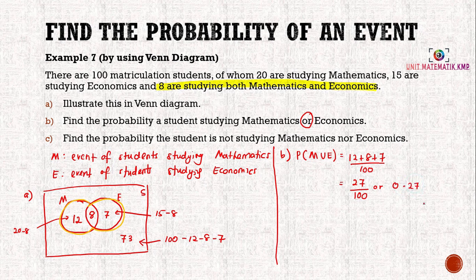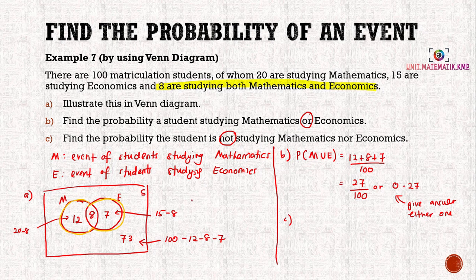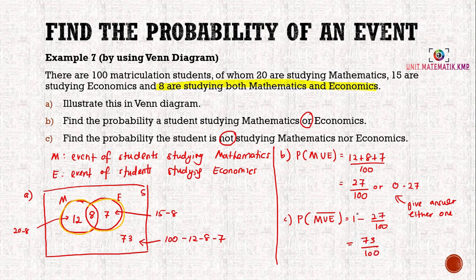Part c asks for the probability that the student is not studying mathematics or economics — meaning they don't study mathematics and they don't study economics either. So we find the probability of the complement of M union E, which by formula is 1 minus 27 over 100, giving 73 over 100. Looking at the Venn diagram, we can confirm that 73 represents students not studying mathematics nor economics.